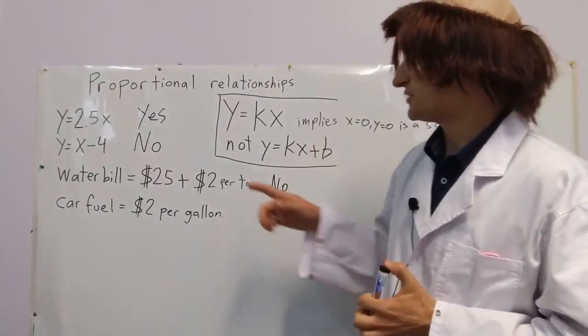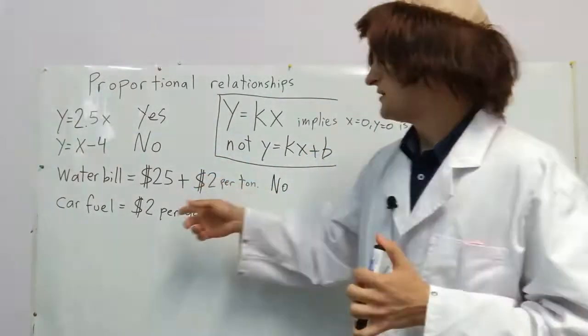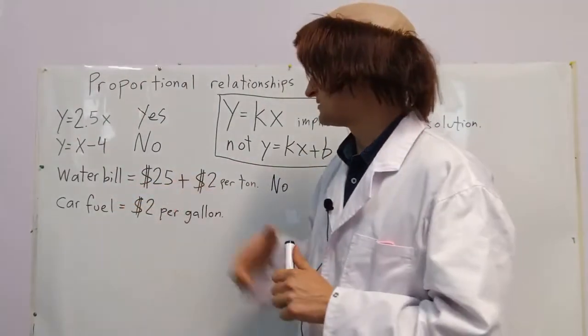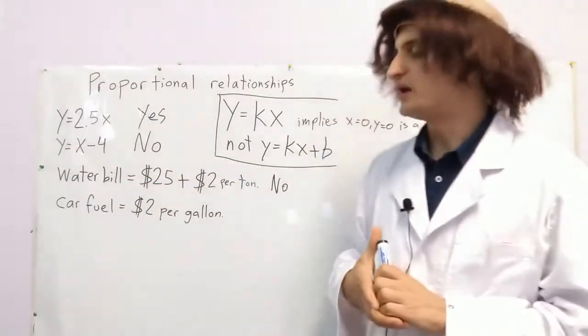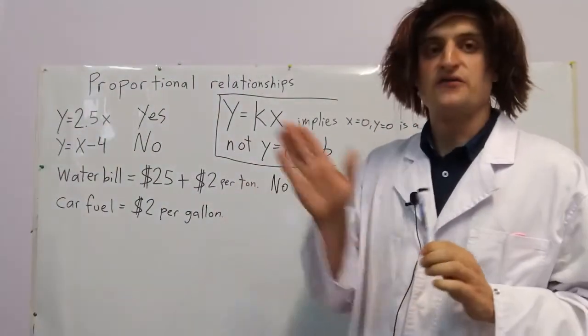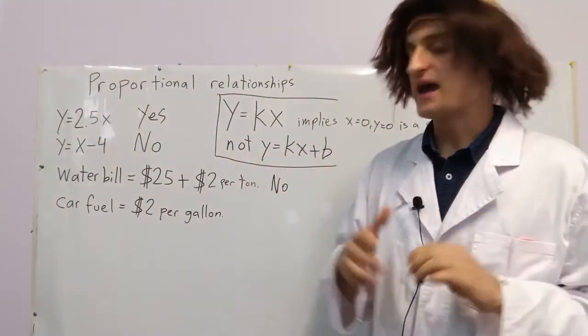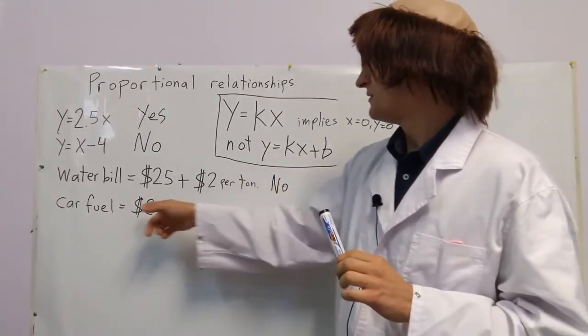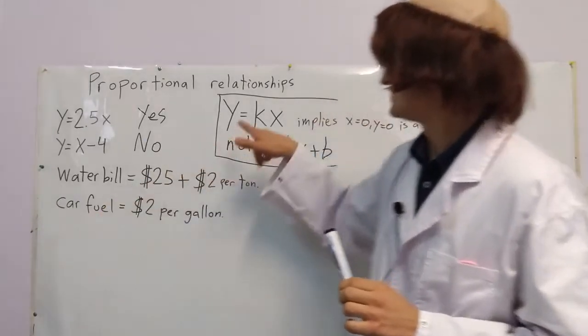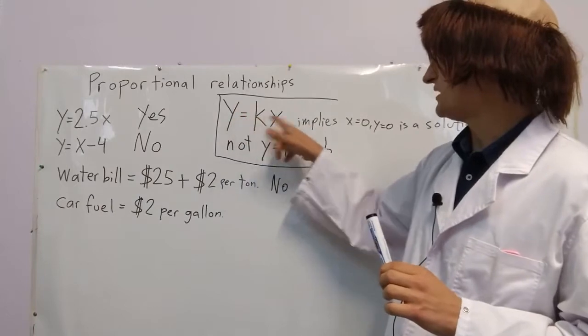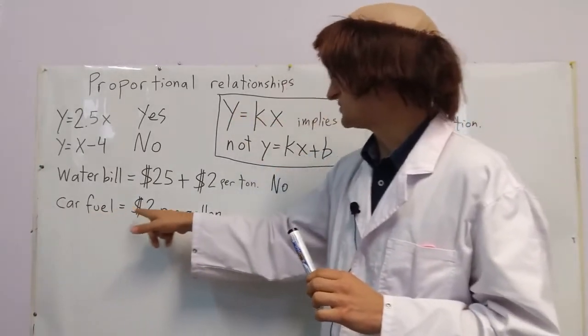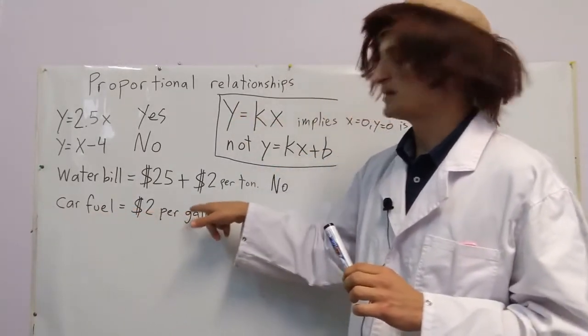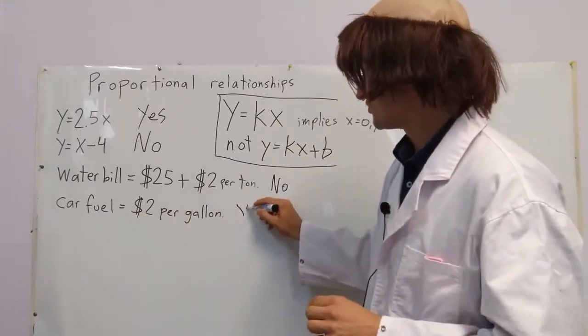How about this one? You take your car to the gas station to get it filled up, and they're charging you $2 per gallon. If you go and you don't use any gas, you won't have to pay anything. This is this format right here. Y equals KX. Y equals K times X. This is proportional.